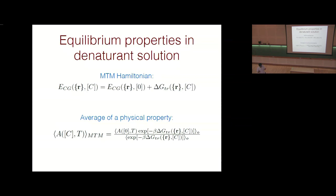In the partition function, we have protein, water, and denaturant coordinates. Coarse-graining involves integrating out solvent and denaturant coordinates, which yields a term representing the free energy of transferring a protein conformation from water to a denaturant solution. Using experimental data, this term can be computed. Langevin dynamics simulations are run in the absence of denaturant at various temperatures to generate protein conformations; for each conformation the free energy of transfer is computed, and perturbation theory is used to compute any property in the presence of denaturant at any temperature.